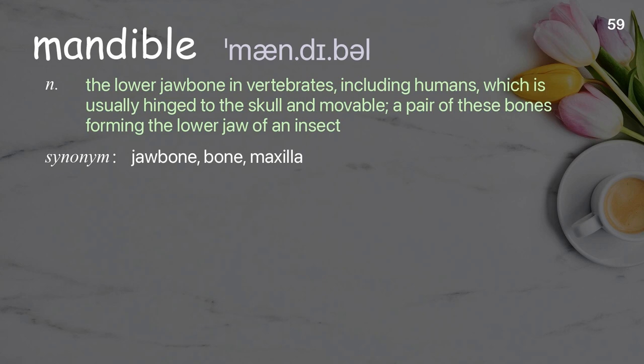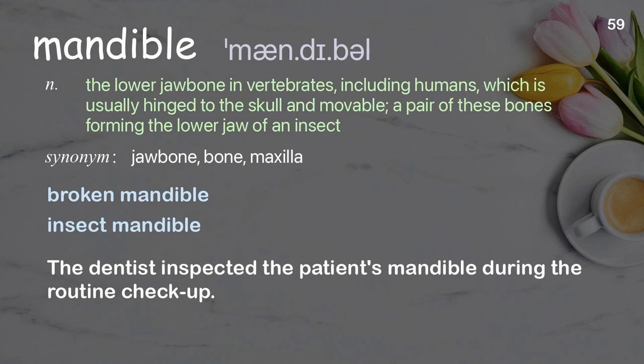Mandible: the lower jawbone in vertebrates, including humans, which is usually hinged to the skull and movable; a pair of bones forming the lower jaw of an insect. Examples: broken mandible, insect mandible. The dentist inspected the patient's mandible during the routine checkup.